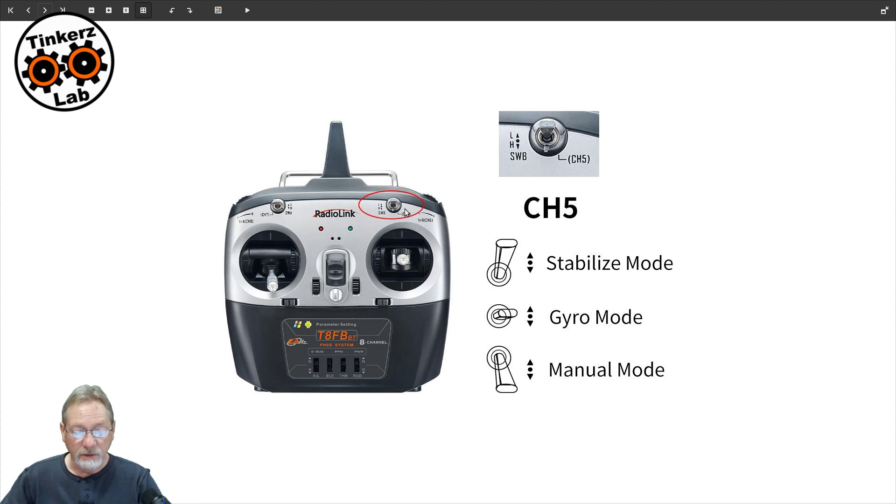Channel 5, their channels are labeled on the transmitter. So this is showing you that this three-position switch is channel 5. Channel 5 operates your gyro modes for fully stabilized, for gyro mode, and for manual mode. And it shows you the position that the switches need to be in for each mode on the gyro.